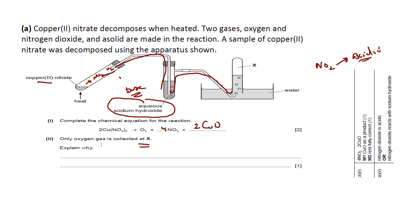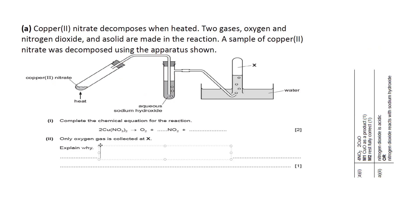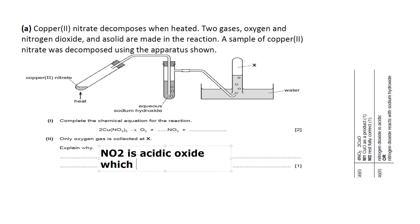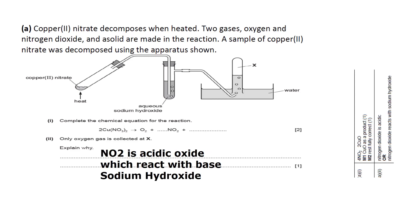Only the oxygen continues through and is collected at point X because nitrogen dioxide is an acidic oxide that reacts with sodium hydroxide (a base/alkali). Nitrogen dioxide is absorbed by the sodium hydroxide solution, while oxygen does not react — it is not an oxide of any acid — so oxygen is collected at point X.